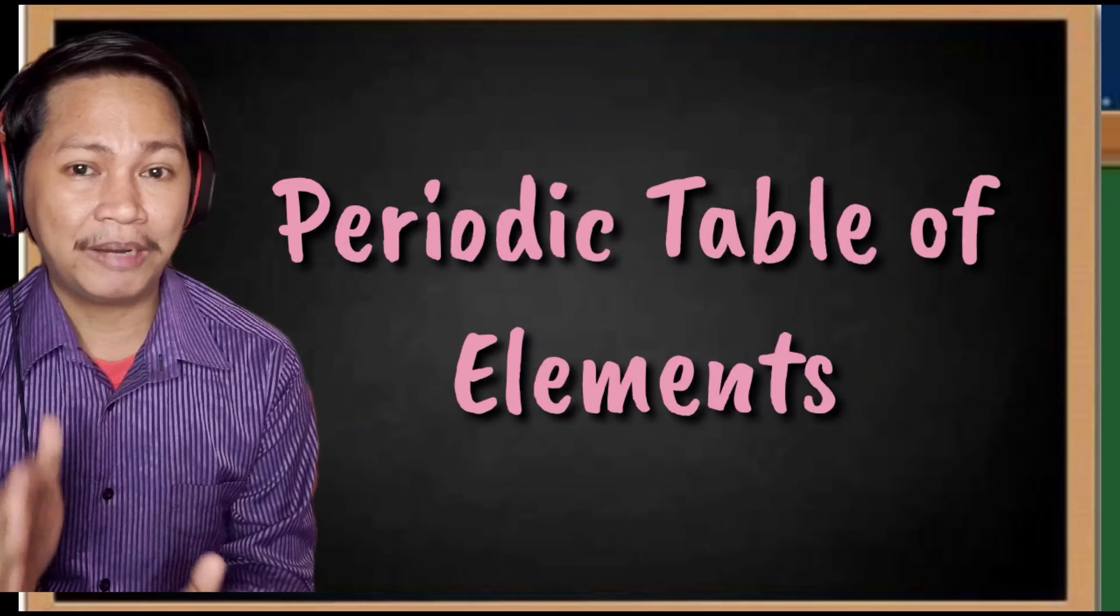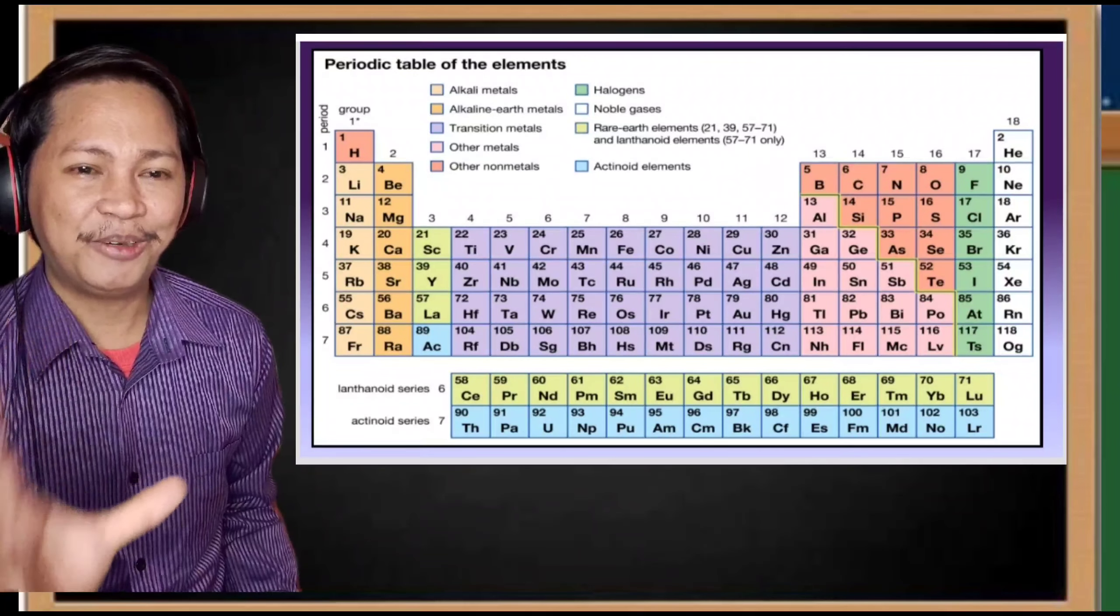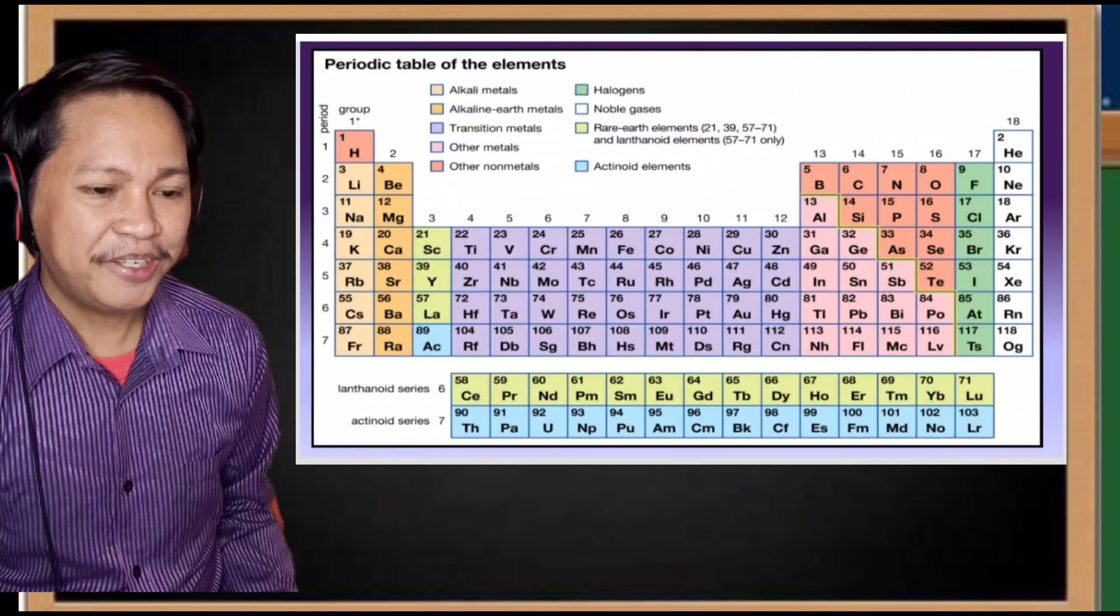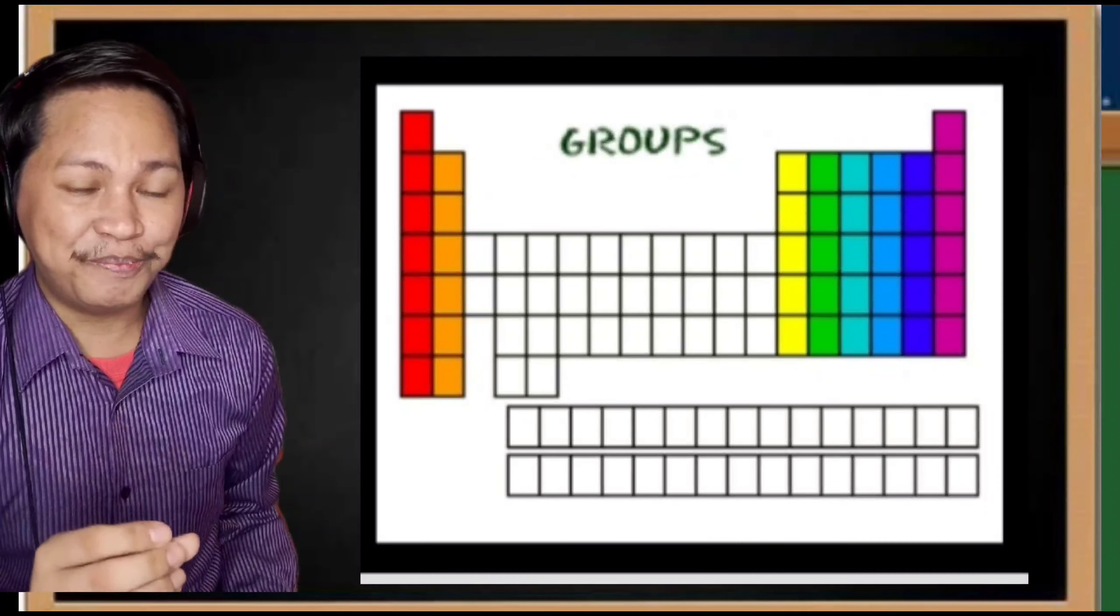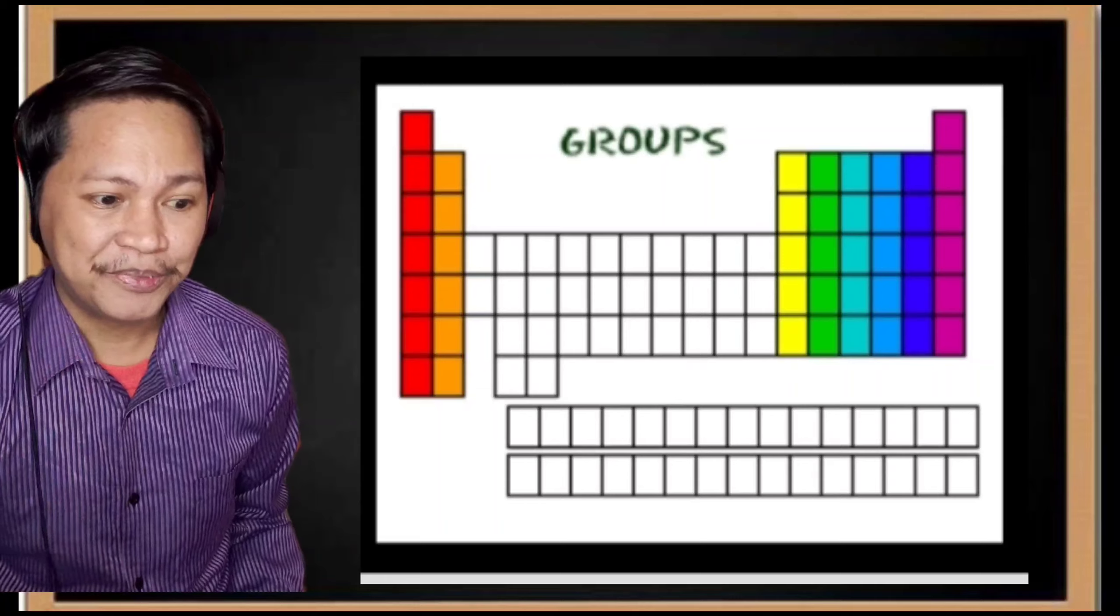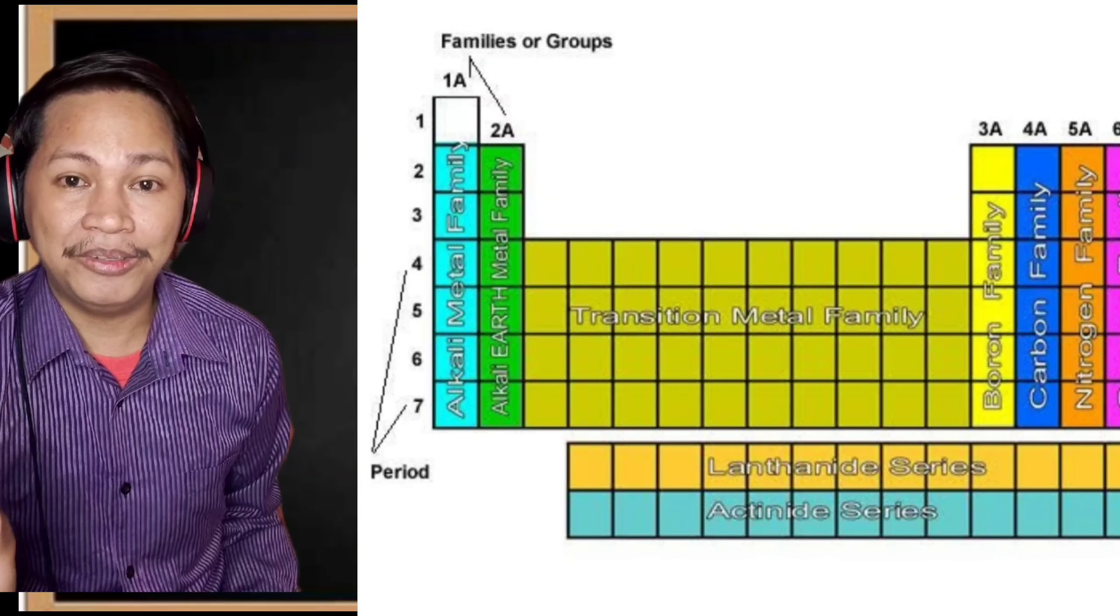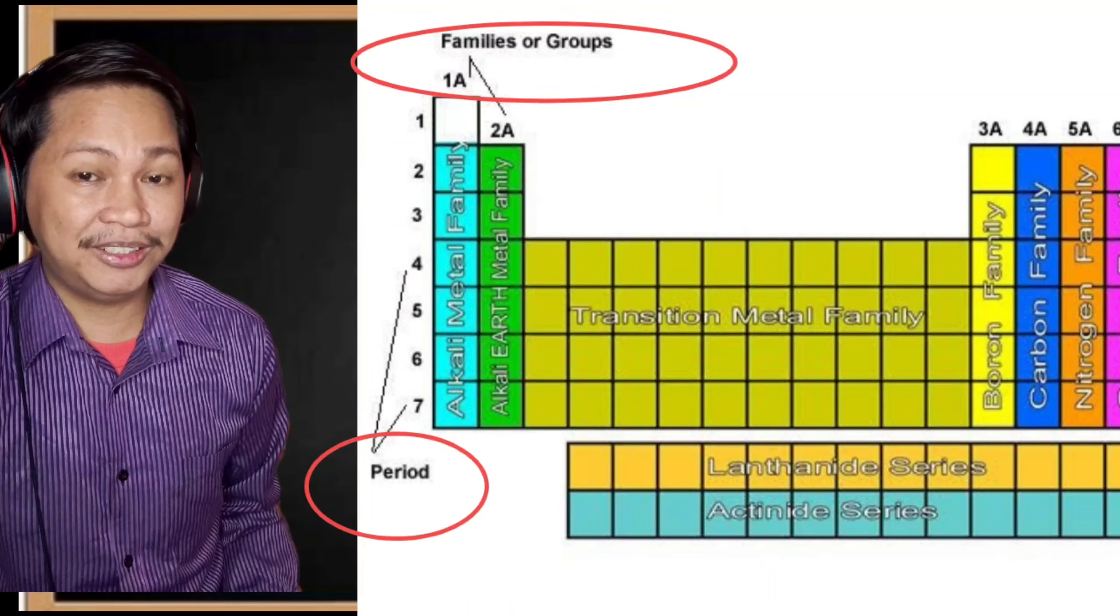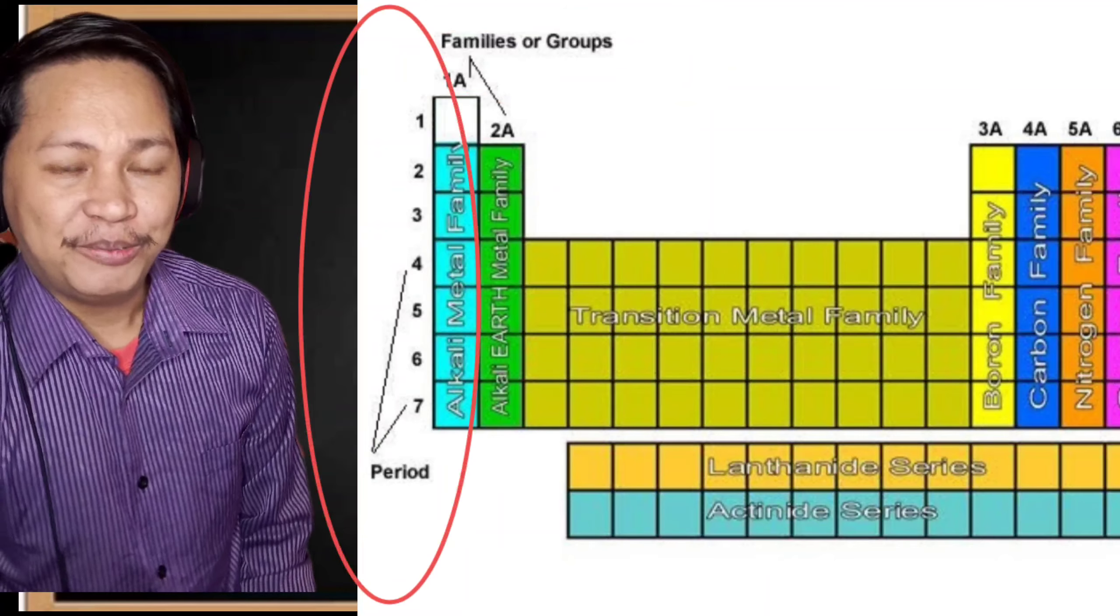Now let's go with the periodic table. We have a technique here to speed up determining valence electrons. We have periodic table groups. The columns of the periodic table are called groups. The vertical columns are called groups. The horizontal ones are called periods, aside from rows.